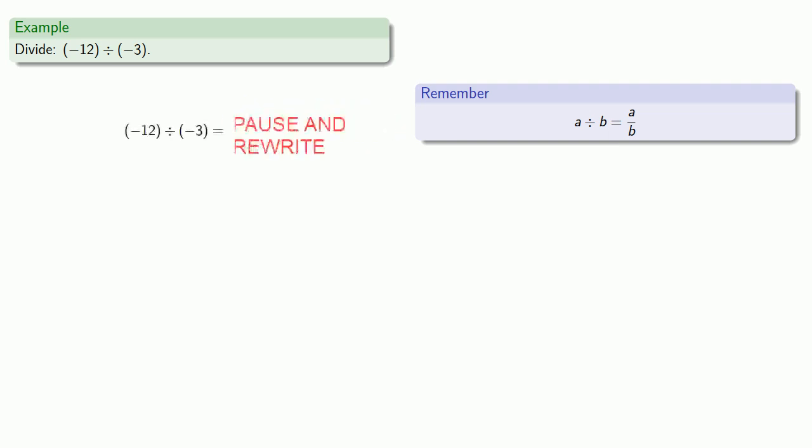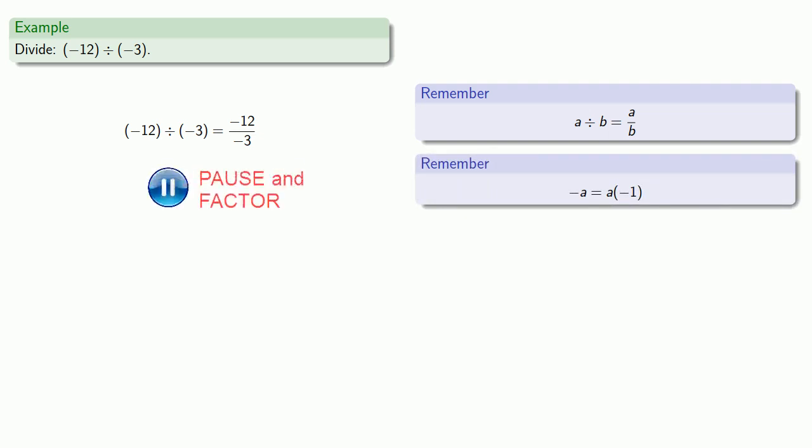So let's rewrite. We also know that negative a is the same as a times negative 1, so let's factor. And because we have a common factor in numerator and denominator, we can remove that common factor.